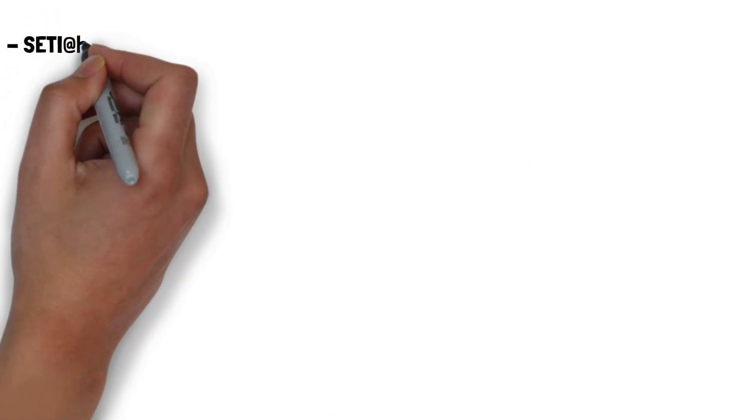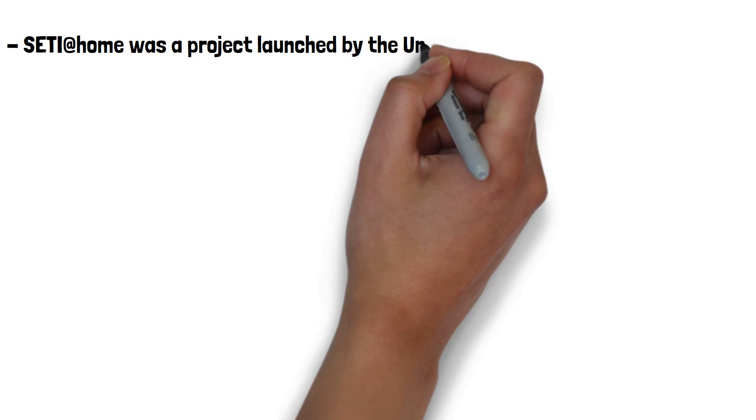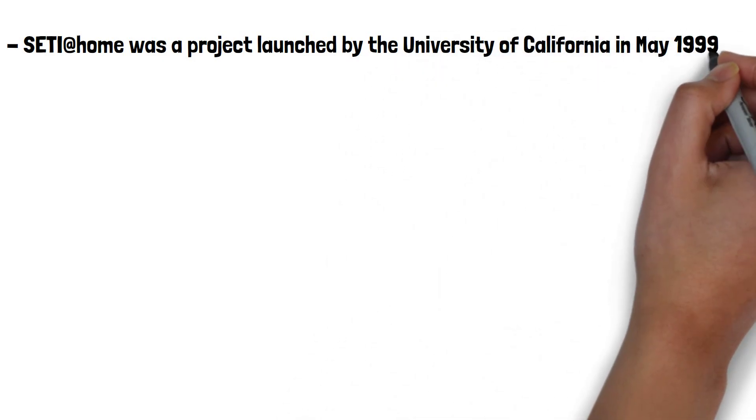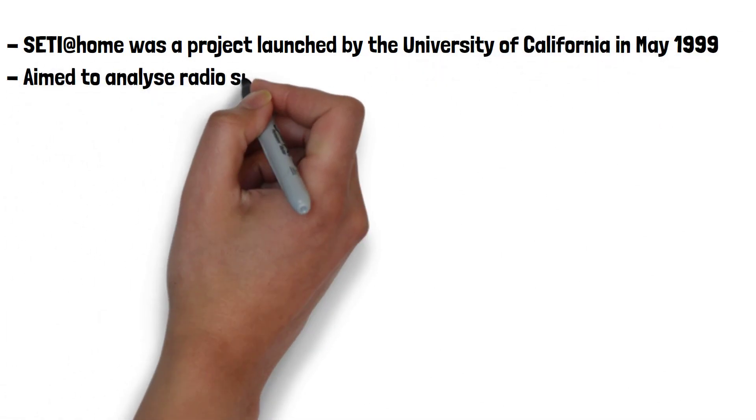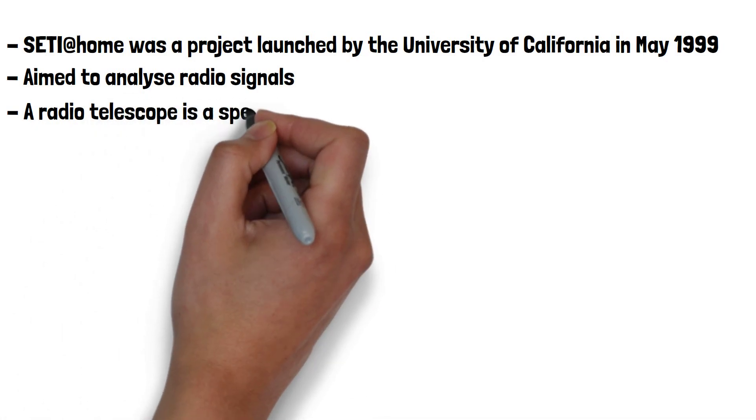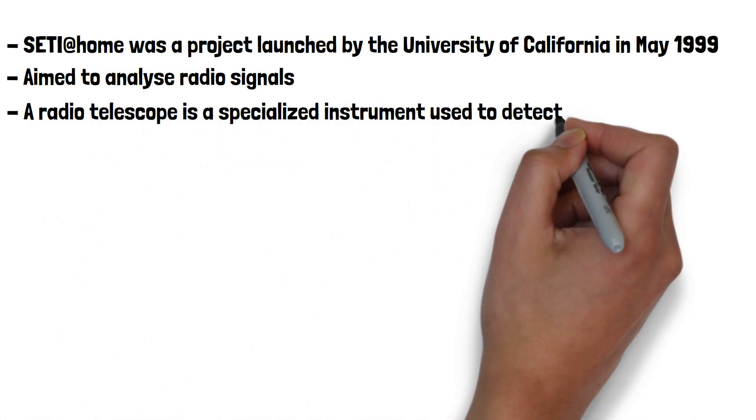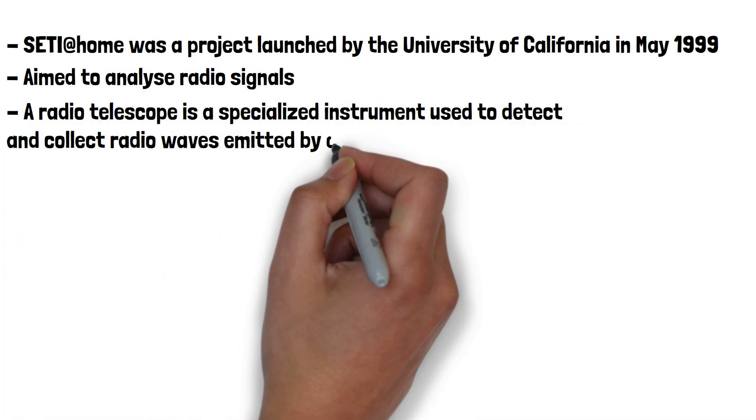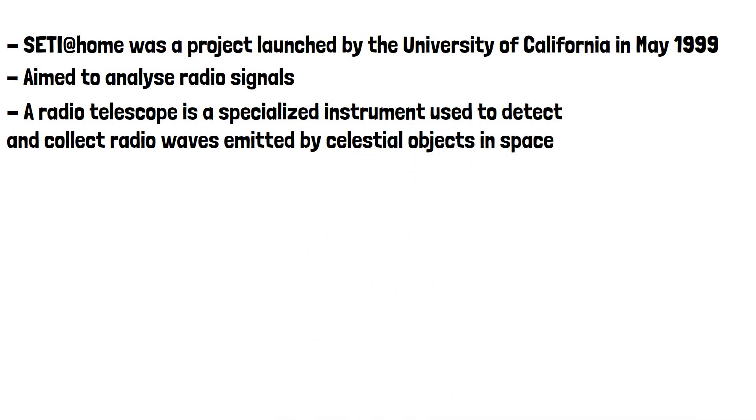SETI at home was a project launched by the University of California in May 1999. The project aimed to analyse radio signals captured by the Arecibo Observatory and the Green Bank Radio Telescope. A radio telescope is a specialised instrument used to detect and collect radio waves emitted by celestial objects in space, providing insights into the universe's structure and composition.